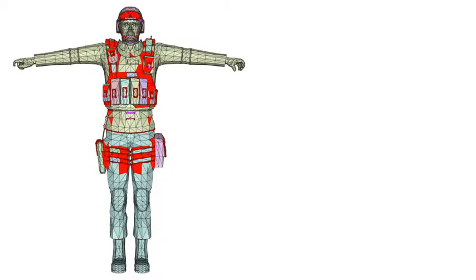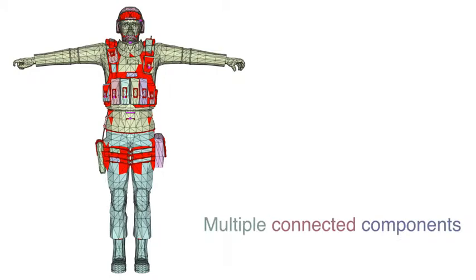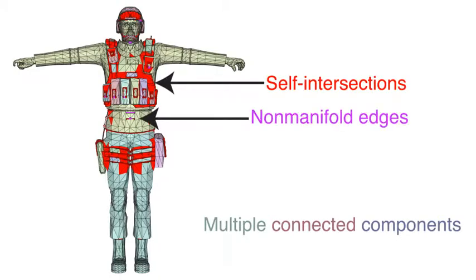Triangle meshes representing solids often contain multiple connected components with numerous self-intersections, non-manifold pieces, and open boundaries. These preclude volume meshing with existing tools.